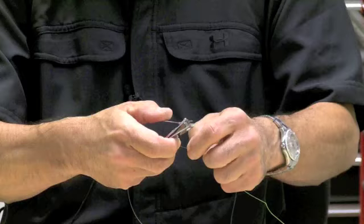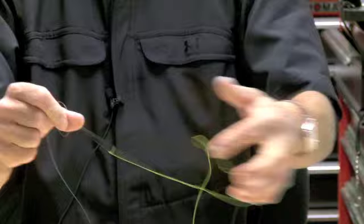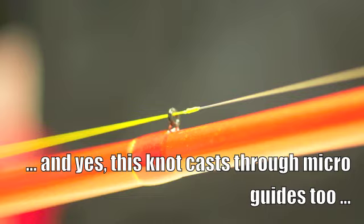Take a fingernail clipper and don't be afraid to trim this close, you can get right in there and you can see it's a super compact knot. The fluorocarbon is encapsulated in the knot so it can't be fractured as it goes through the guides or over the bale of a spinning reel.